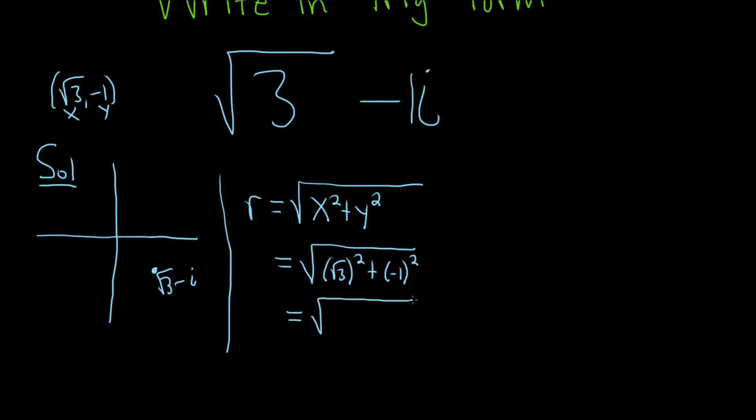When you square the square root of 3, you get 3. So this is 3. And when you square negative 1, you get 1. So 3 plus 1 is 4, and the square root of 4 is 2. So r is equal to 2. So now we have our r.